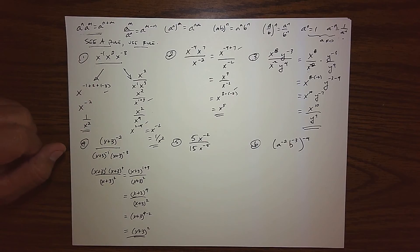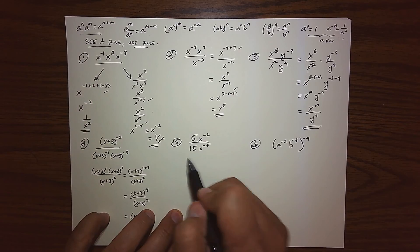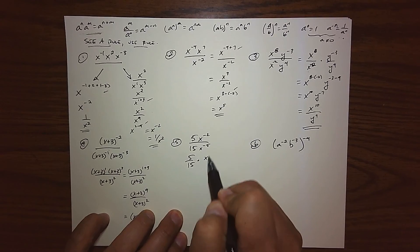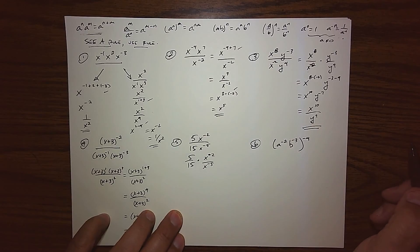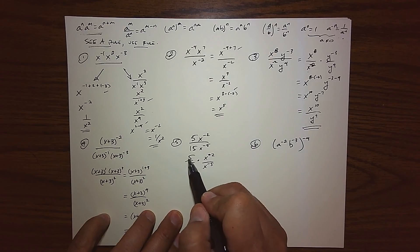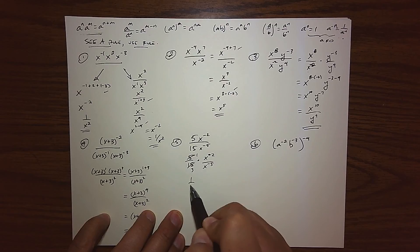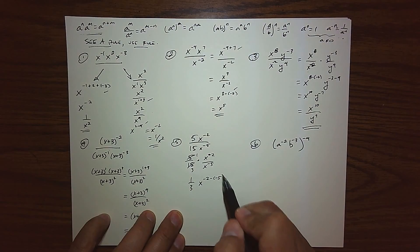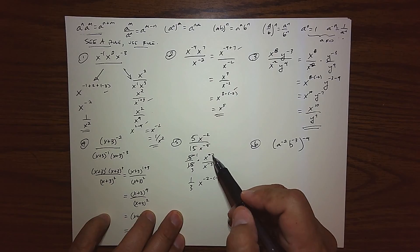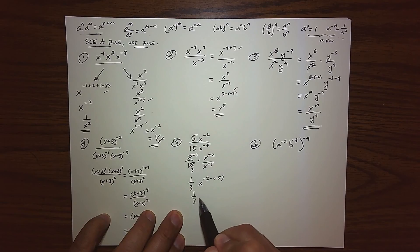Number 5, again, I initially see this as two different fractions that need to be worked on. So there's the fraction 5 fifteenths, and we're multiplying it to the fraction x to the negative 5 over x to the negative 2. So this fraction, we just reduce like we normally would. 5 goes into there once, and there 3 times. So we're looking at the fraction 1 third. And here, I see this as an opportunity to use my quotient rule. Keep the base, top exponent minus the bottom. So we end up with 1 third times, this is basically x to the third.